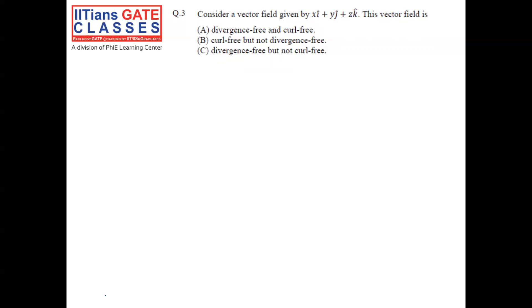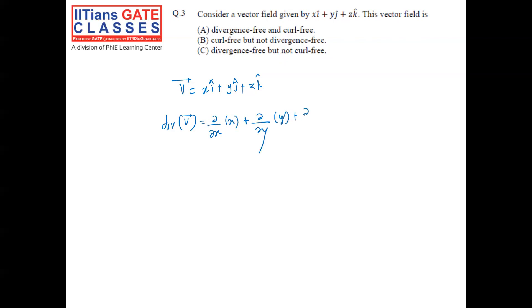The next question is again from vector fields. The vector field is given by xi + yj + zk. The options are related to divergence and curl. If we say v-bar = xi + yj + zk and take the divergence of v-bar, it is ∂x/∂x + ∂y/∂y + ∂z/∂z = 1 + 1 + 1 = 3. So it is clear that divergence exists, meaning the field is not divergence-free.